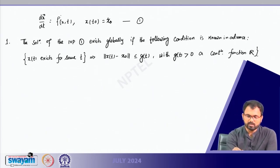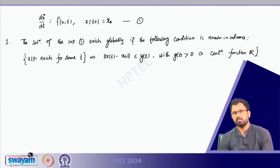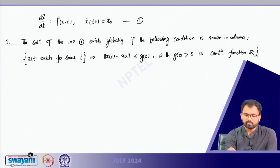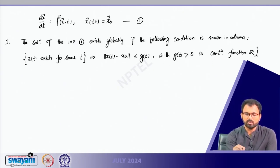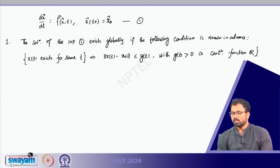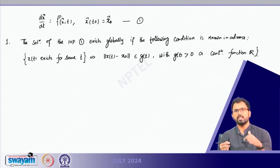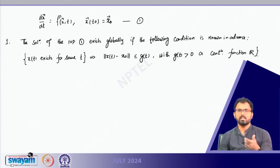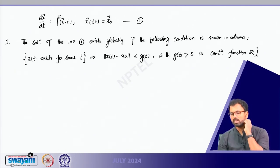Here of course dx/dt and f is a vector, and x is a vector. Basically, if norm of x(t) minus x₀ can be made less than or equal to some g(t), then g(t) is a positive function, and you will get a global solution.